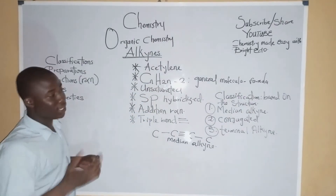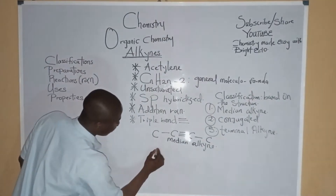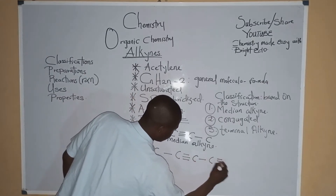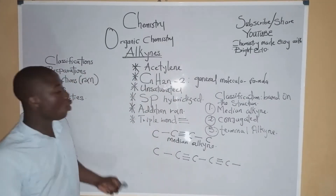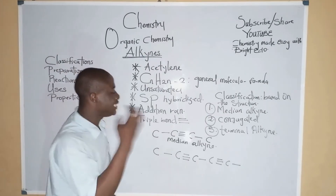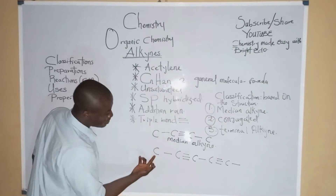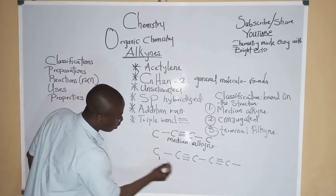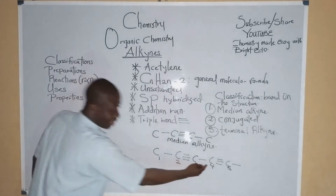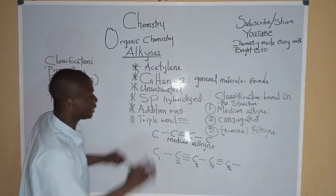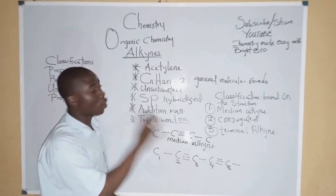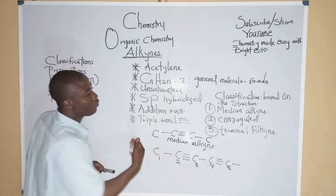How do we know a conjugated alkyne? A conjugated alkyne is one whereby there is even distribution of the triple bonds. You can see we have carbon 1, carbon 2, carbon 3, carbon 4 and carbon 5. Carbon 2 has a triple bond and carbon 4 has a triple bond. So for a conjugated alkyne, there is a regular arrangement of the triple bonds.